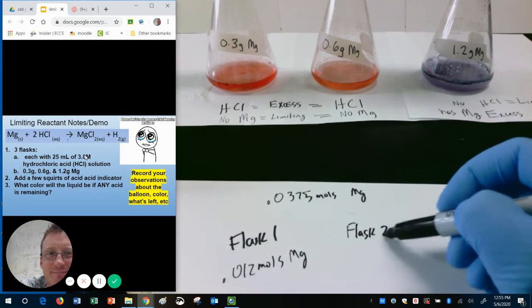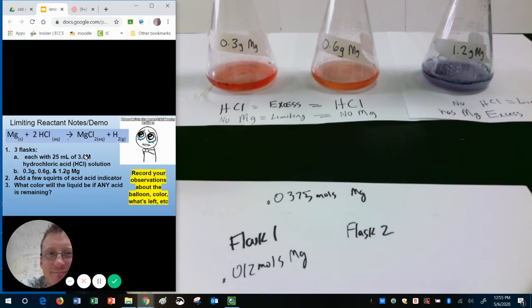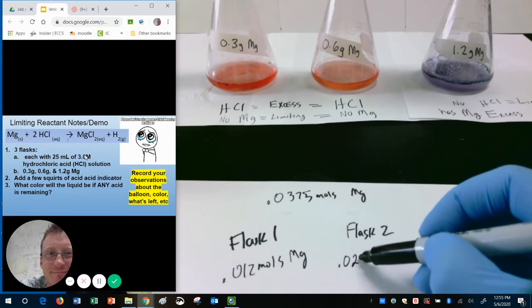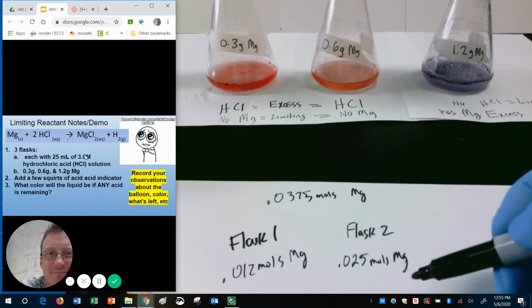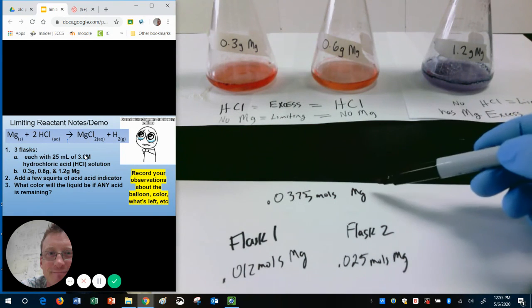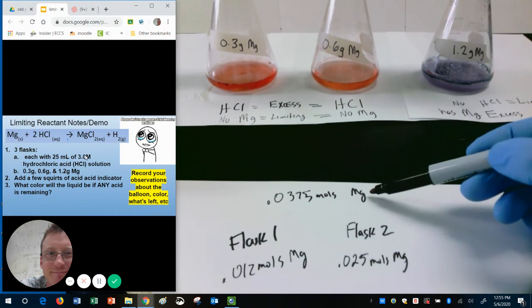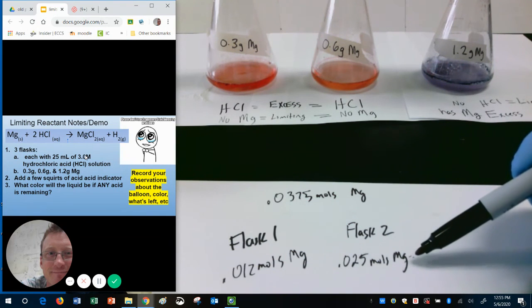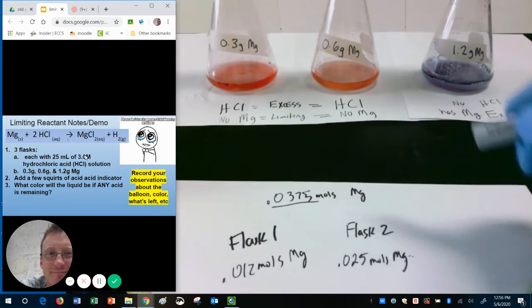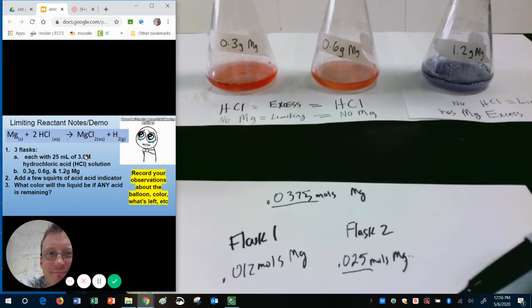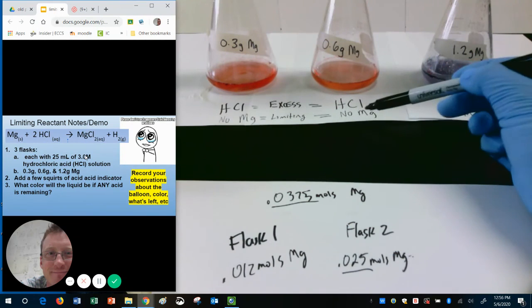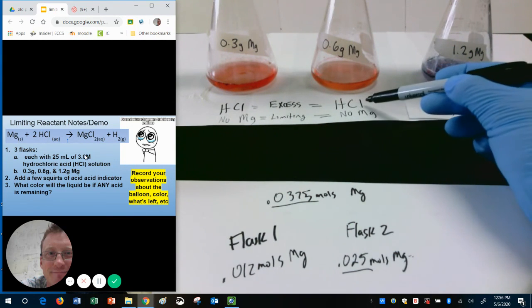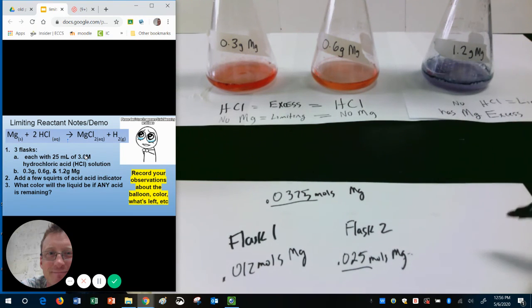Flask two. How many moles of Mg did we have in flask two? We had 0.025 moles of Mg. How much acid do we have? We have enough to react with 0.0375. Notice this is still smaller. In other words, we have more acid than we need. We have enough acid to react with this much Mg, but we only have this much. 0.025 is smaller. That's why in our second flask, Mg is limiting. It ran out. We had extra acid, HCl.